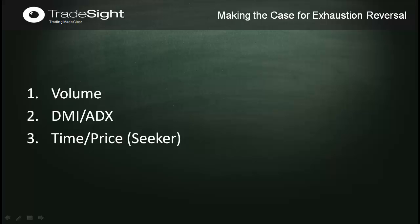Number one is volume. We've been moving up on decreasing volume as we're making new highs. The other one is the DMI, or the directional movement indicator, or the ADX, which is also extremely overbought. This is a momentum indicator, but once it gets too overbought above the 70 level, it actually indicates that the trend may be about to end.